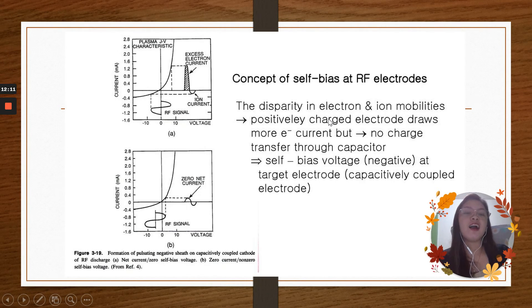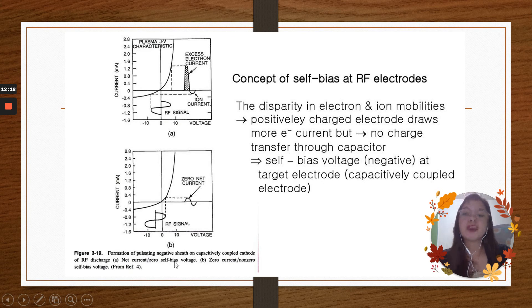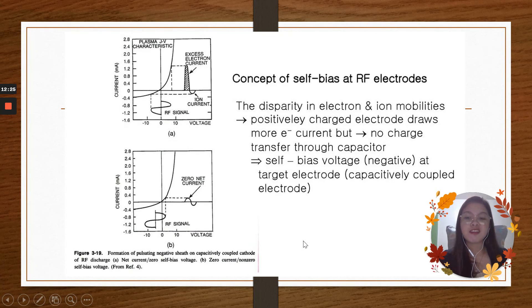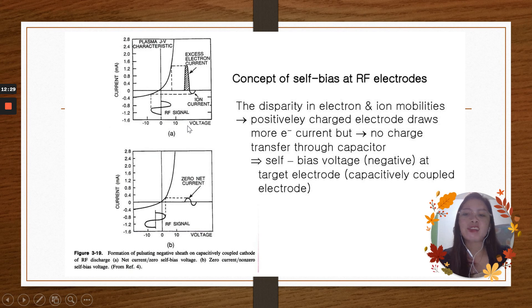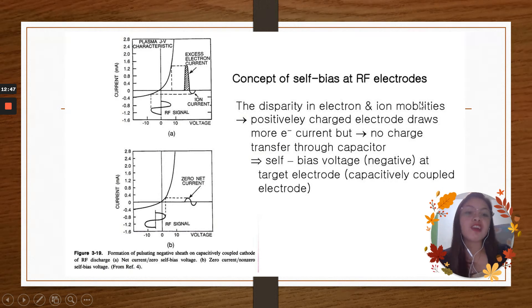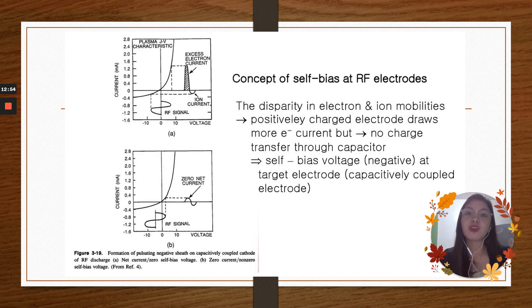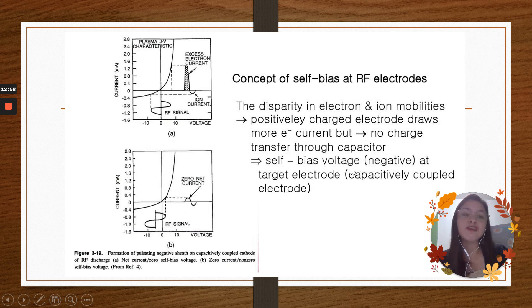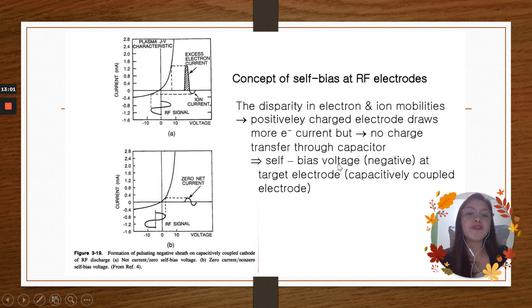For the concept of self-bias at radiofrequency electrodes, we have here the figure 3-19 formation of pulsating negatives on capacitively coupled cathode of radiofrequency discharge. From set A, we have the net current zero self-bias voltage. And for set B, we have the zero current non-zero self-bias voltage. This one is the disparity in electron and ion mobilities. Positively charged, electrode draws more E to negative current but no charge transferred through capacitor. This self-bias voltage negative at target electrode, capacitively coupled electrode.